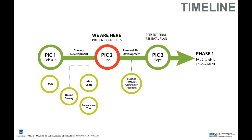For example, if a basketball court and the spray pad were part of phase one, we would start looking at that in greater detail and have a smaller engagement session, then start working on detailed design with anticipation of doing construction in the spring of 2022. That same cycle will happen for phase two and phase three. But for now we're really focused on the concept and want to make sure that what we bring forward as a renewal plan works for the community.